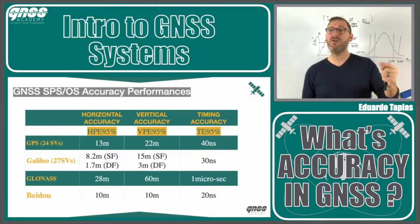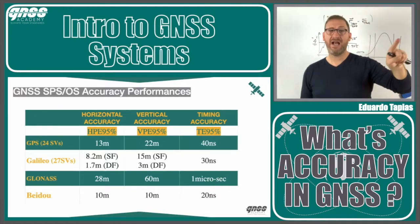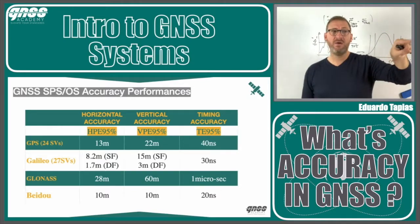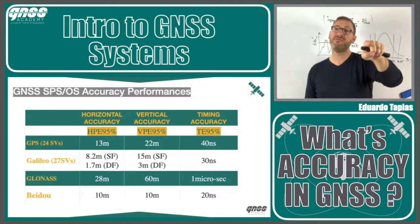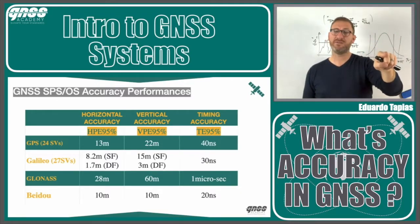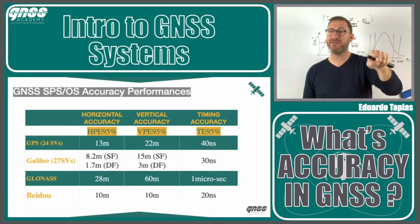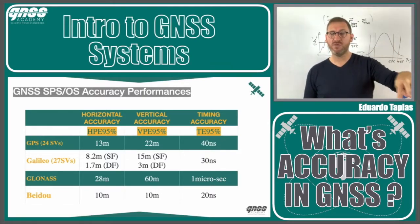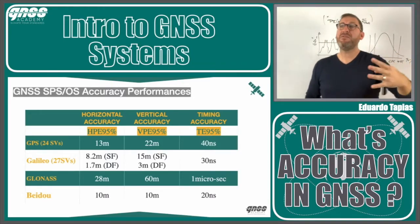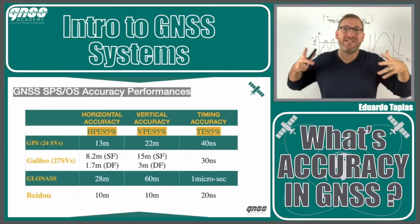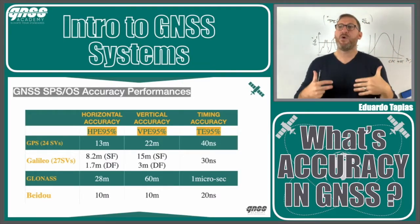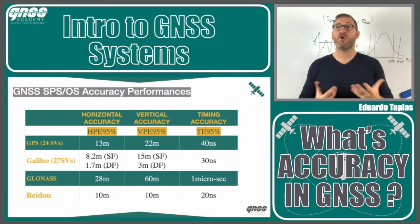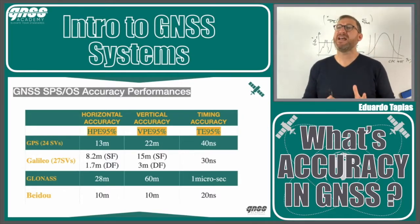For Galileo using 27 satellites, in single frequency the values are 8.2 meters horizontal and 15 meters vertical. In dual frequency, it's 2.1 meters horizontal and 3 meters vertical. These are the minimum performance levels they publish for the constellation.